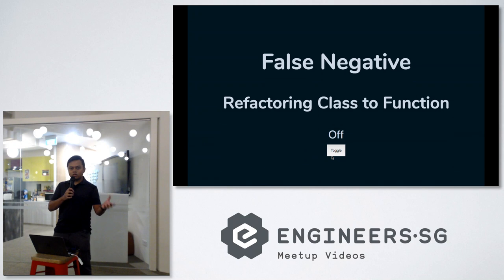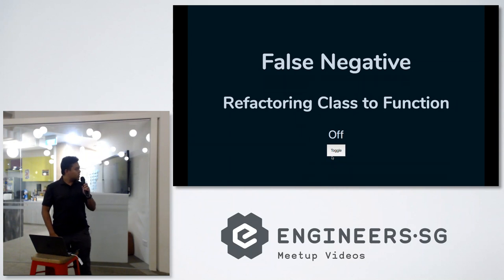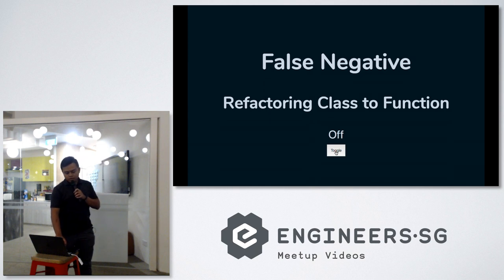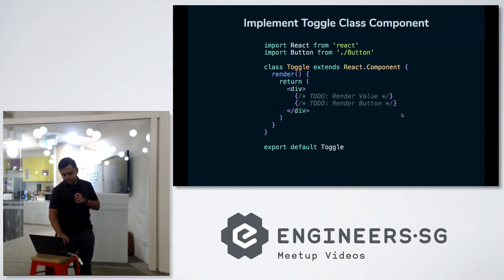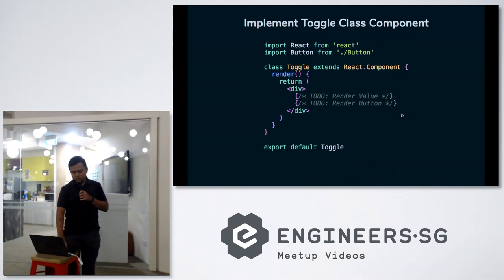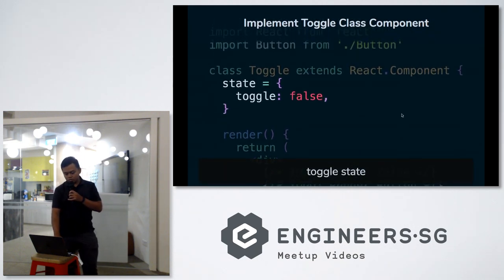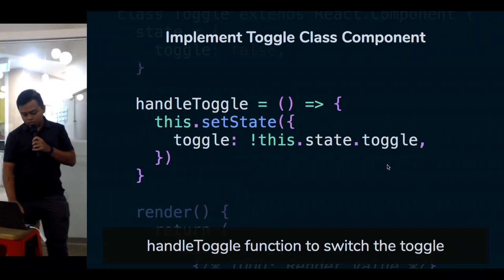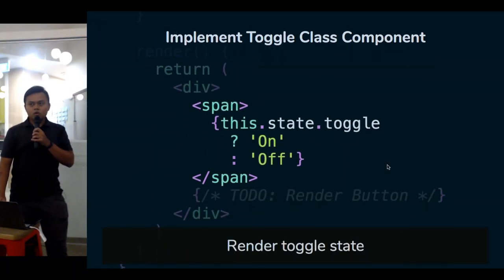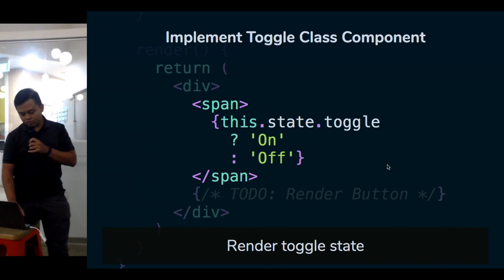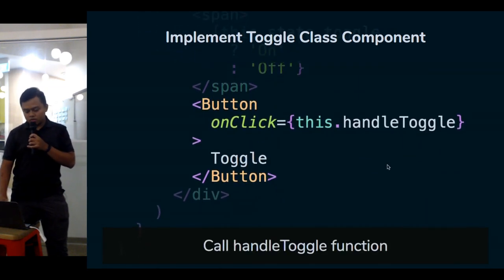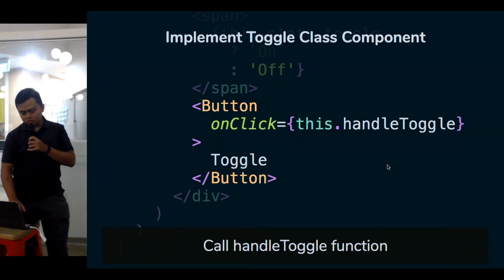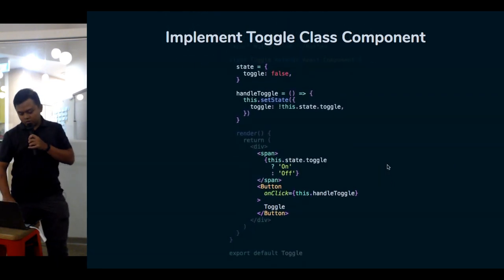I'm going to present two cases. The first one is a false negative — a negative test result that is actually false, because it should pass. In this case, we are refactoring a class component to a function component. It's a toggle function. We have the state toggle as false, a handle function which negates the toggle flag, and we show 'on' if it's true.